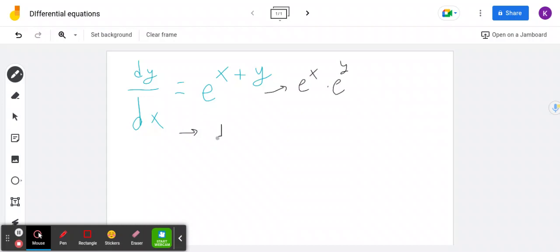And so what we get is that dy times e to the negative y, because we're dividing by e to the y, is equal to e to the x dx.